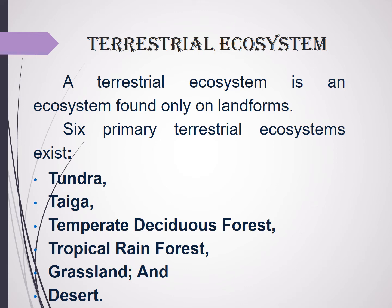Let us move further with the terrestrial ecosystem. It deals with the landforms. There are six primary terrestrial systems. They are tundra, taiga, temperate deciduous forests, tropical rain forests, grasslands and deserts.